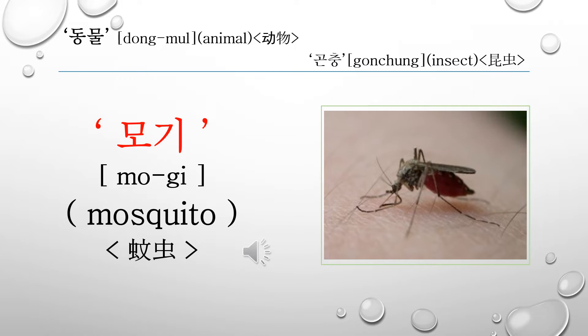This word is 모기. 모기 is called a mosquito in English. Let's read it again: 모기, 모기.